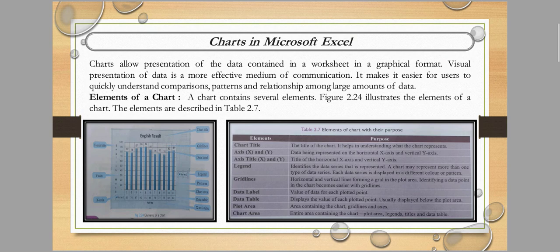Grid lines help us identify which data point corresponds to values like 10, 20, 30, 40, 50 on the chart. Next is data label — it shows the value of each plotted point. Each point in the chart has a value shown as a data label. Next is the data table, which shows the value of each plotted point, usually displayed below the plot area.